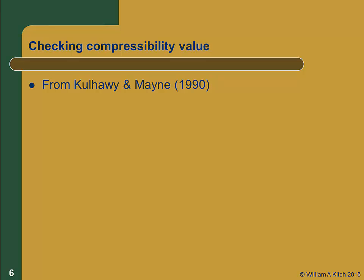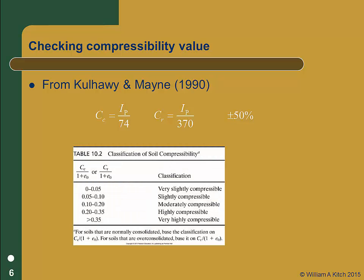It's always good to check our computations to see if they seem reasonable. From Kulhawy and Mayne's EPRI report on estimating soil properties, we can use correlations between plasticity index and the compression and recompression indices. Most soils will lie within 50% of the values computed from these correlations, so if you compute a value outside this range, you should check your numbers. Table 10.2 of your text provides a qualitative description of the ranges of compression and recompression ratios, and is also useful for checking computed values.